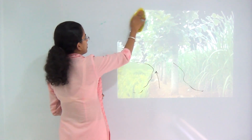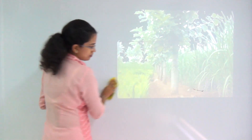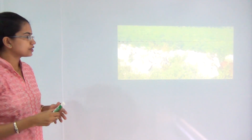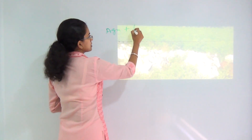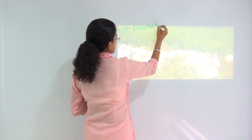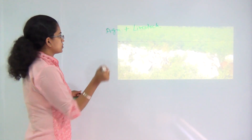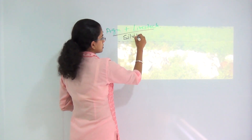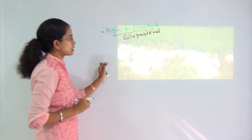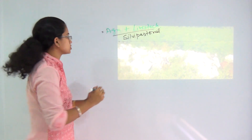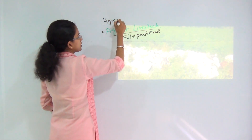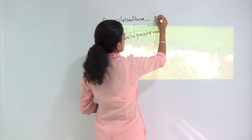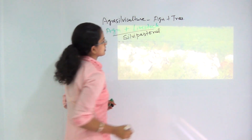The next thing we talk about is silvic-pastoral practices. Under silvic-pastoral practices, you are trying to maintain agricultural produce plus livestock. So silvic-pastoral activities include agriculture and livestock. In the previous one, when we talked about agri-silviculture, we talked about agriculture product plus trees.